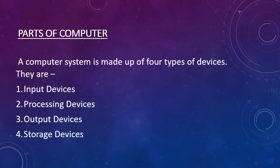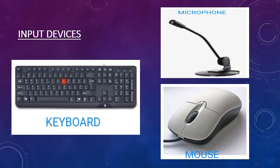After that, we will learn about parts of a computer. A computer system is made up of four types of devices: input devices, processing devices, output devices, and storage devices. Here are examples of all these devices. The main input device is the keyboard — it is the most common input device that every computer system has.